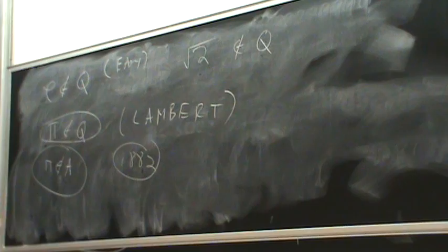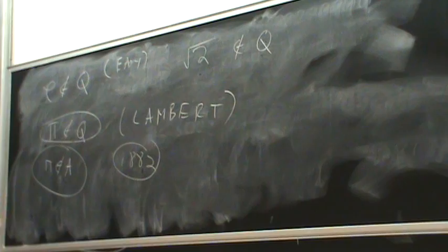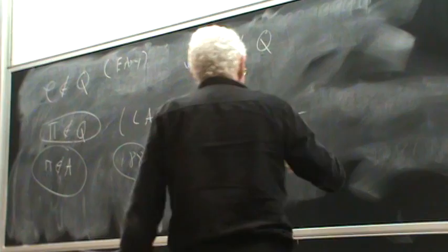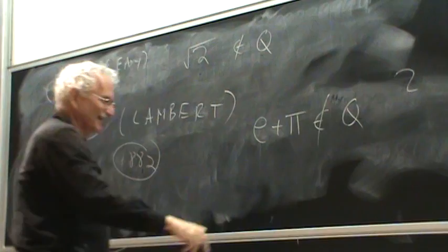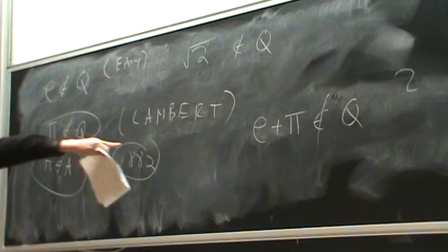And even this is not too hard nowadays. But nobody had any clue. I do have a clue. I'm sure that e plus pi is not rational. Because why shouldn't it be? There are all real numbers.